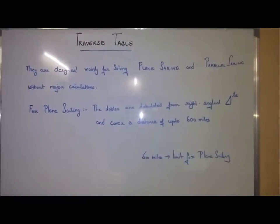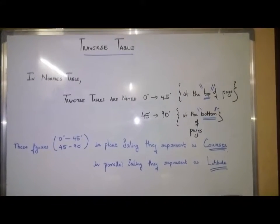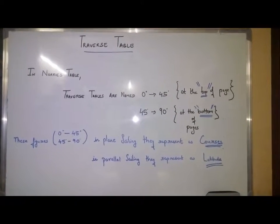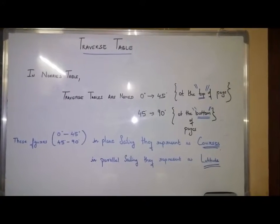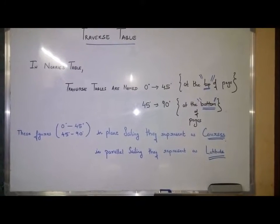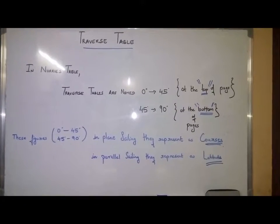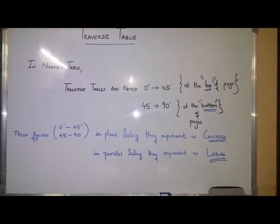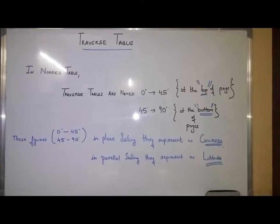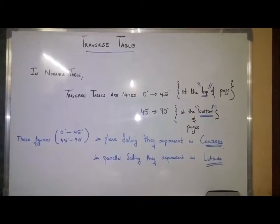600 miles is the limit for plane sailing. In Norie's table, traverse tables are named 0 degrees to 45 degrees at the top of the page and 45 degrees to 90 degrees at the bottom of the pages. These figures, in plane sailing, represent courses. In parallel sailing they represent latitudes.